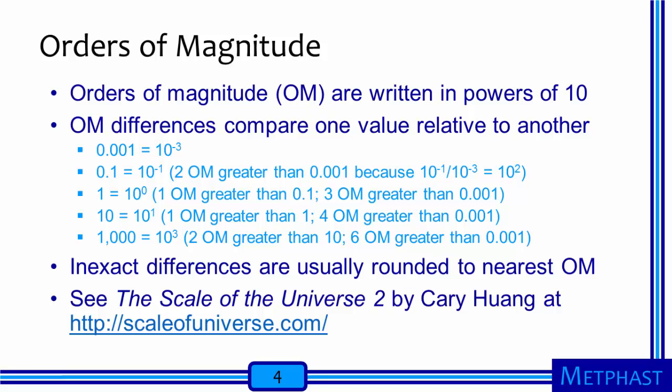When we talk about nanotechnology, we talk about dimensions much smaller than those we are familiar with. The concept of orders of magnitude is relevant when we consider these dimensions. Orders of magnitude are written as powers of ten, and orders of magnitude differences between dimensions can also be written as powers of ten. An object that is ten times bigger than another object is ten to the first power, or one order of magnitude larger. Likewise, an object that is one hundred times bigger is ten to the second power, or two orders of magnitude larger.